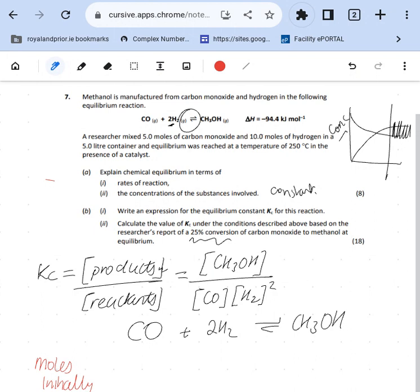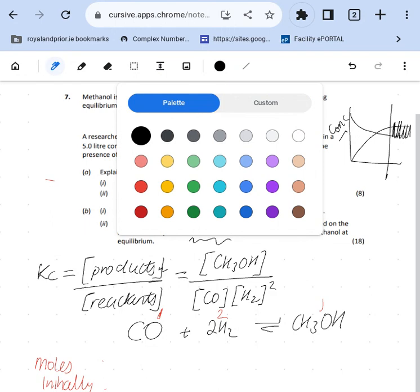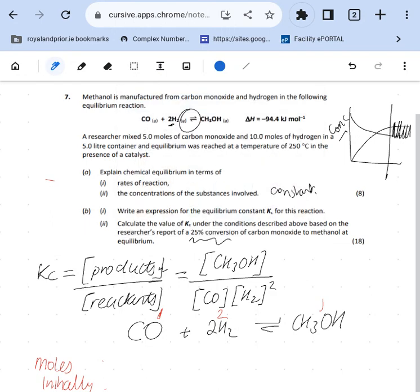And that's in moles per liter. Now another thing good to do at the start is fill in your ratio. The ratio there is 1:2:1. So you might hear some people chatting about RICE - that brings in your ratio, probably your initial, your change, and then your equilibrium. So it's the same thing. If you think of the acronym RICE or just try and remember those things - and you should remember them because you should be doing them enough. Keep doing them till you get them right.